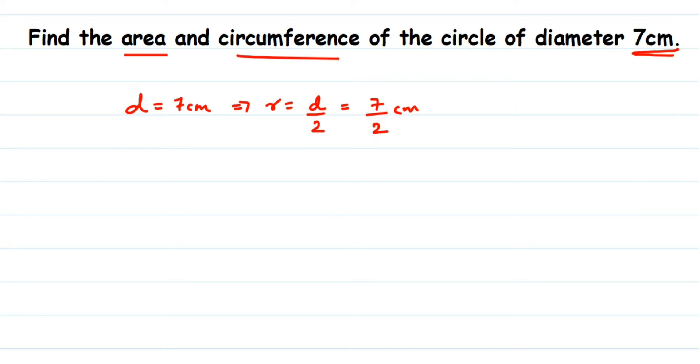Now we're going to find the area first. The area formula is πr². We're going to directly substitute the values. Here I'm going to take pi value as 22/7 because the numbers will get cancelled. You can take 3.14 since it's not mentioned in the question what value to take.